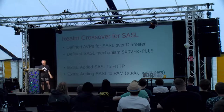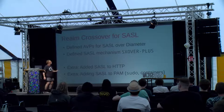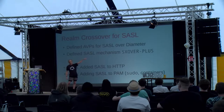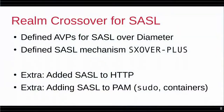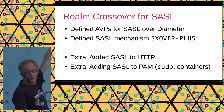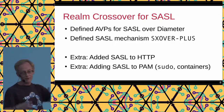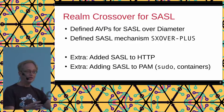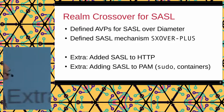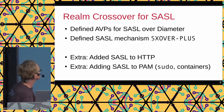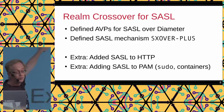We used Diameter — it's like RADIUS, but RADIUS is optimized for trusted internal networks, while Diameter is optimized for realm-crossover, meaning mutually untrusting domains. We needed to define just a few attribute-value pairs to carry the SASL content back and forth, plus the SXO4+ mechanism. We've implemented this, and it works.